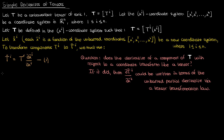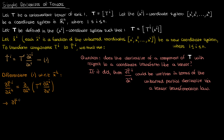But how do we even start with establishing a transformation law for the coordinate derivative of our tensor component? Well, we've got to find the derivative of equation 1 with respect to x super k bar and see where that takes us. So let's differentiate both sides of equation 1 with respect to x super k bar. We'll apply the product rule to the right-hand side to get the following, which I'm going to call equation 2.